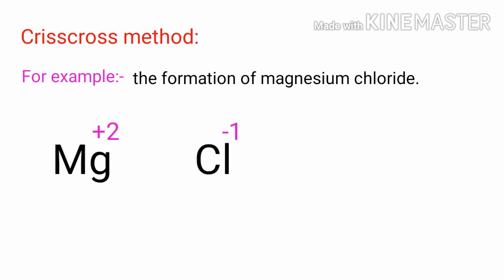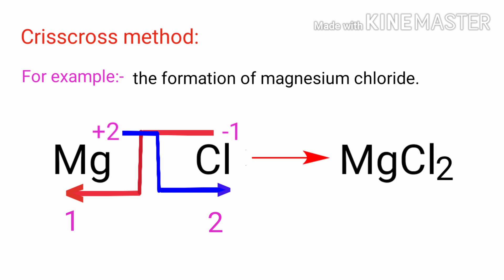Now you can apply the criss-cross method for this compound. We can write the oxidation number of magnesium as the subscript of chlorine and the oxidation number of chlorine as the subscript of magnesium. Therefore, the chemical formula of magnesium chloride is MgCl2.